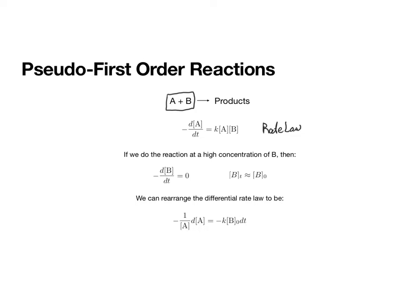And so for these reactions, we would write the rate law as the rate of change of A with respect to t is our rate constant times the concentration of A times the concentration of B. But in this rate law, we have too many things changing.